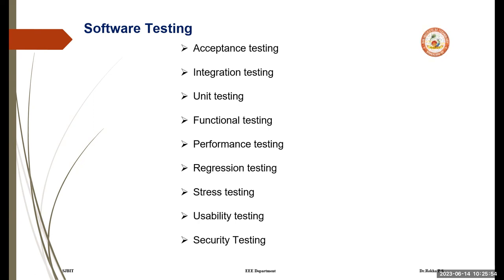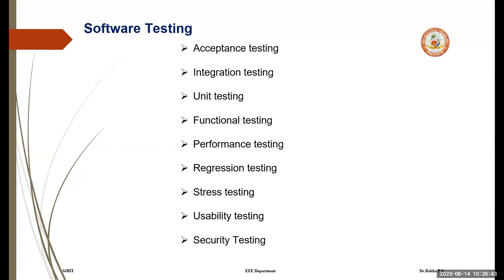Next is unit testing. Validating that each software unit performs as expected is called unit testing. A unit is the smallest testable component of an application. Since an application is large, there will be many units, and a unit is the smallest testable component. Next is functional testing — checking functions by emulating business scenarios based on functional requirements. Black box testing is a very common way to verify functions in functional testing.